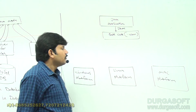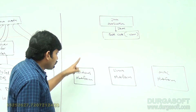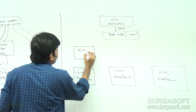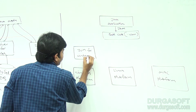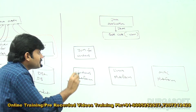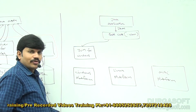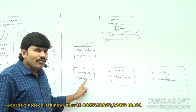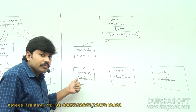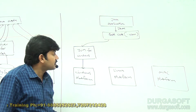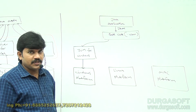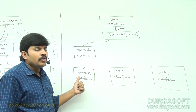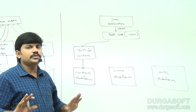This bytecode can run on any platform. If you want to run this bytecode on Windows, then we need a JVM for Windows. Windows JVM will take this bytecode, convert it into Windows-specific machine code, and then execute it. So who is going to take care of converting into platform-specific code? JVM is responsible. JVM converts the platform-independent bytecode into Windows-specific code so that Windows can understand and execute it.